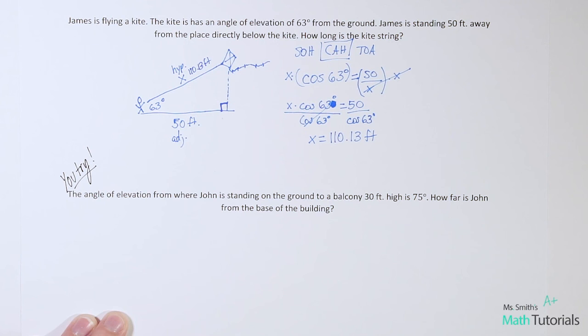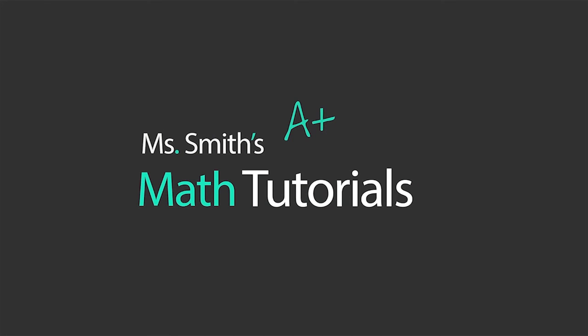Now here's one for you guys to try on your own. The angle of elevation from where John is standing on the ground to a balcony 30 feet high is 75 degrees. How far is John from the base of the building? You guys try that one on your own. I will post the answer in the video description below. This has been Ms. Smith Math Tutorials.